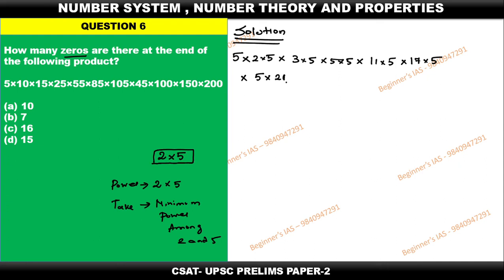45 can be expressed as 5 into 9. This 100 can be expressed as 4 into 25. That 4 can be expressed as 2 into 2, and 25 can be expressed as 5 into 5.